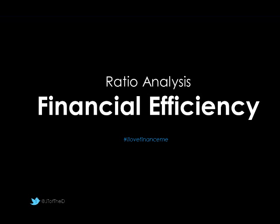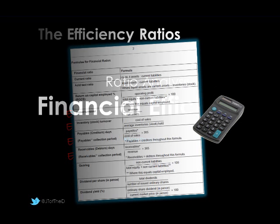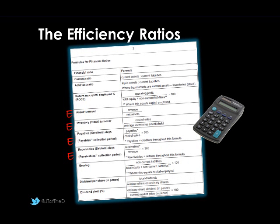In this video tutorial we'll look at the ratio analysis techniques that are used to measure financial efficiency. The ratios we're looking at are the middle 4 on page 2 of the Buzz3 paper: asset turnover, inventory or stock turnover, and payables or receivables. If ever you're asked to look at the efficiency ratios, it's the middle 4 here.